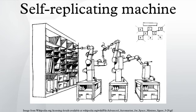A self-replicating machine is a type of autonomous robot that is capable of reproducing itself autonomously using raw materials found in the environment, thus exhibiting self-replication in a way analogous to that found in nature.